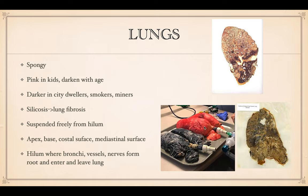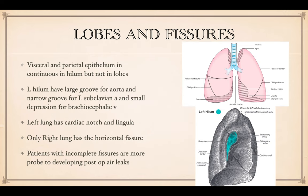Look how much this healthy lung is able to expand versus the damaged one. The visceral and parietal epithelium are continuous in the hilum, but not in the lobes — right in the hilum here. The rest are separated by the pleural cavity. In the left hilum, there's the groove for the aorta — the aortic groove — and a groove for the left subclavian and the left innominate vein, or the brachiocephalic vein.